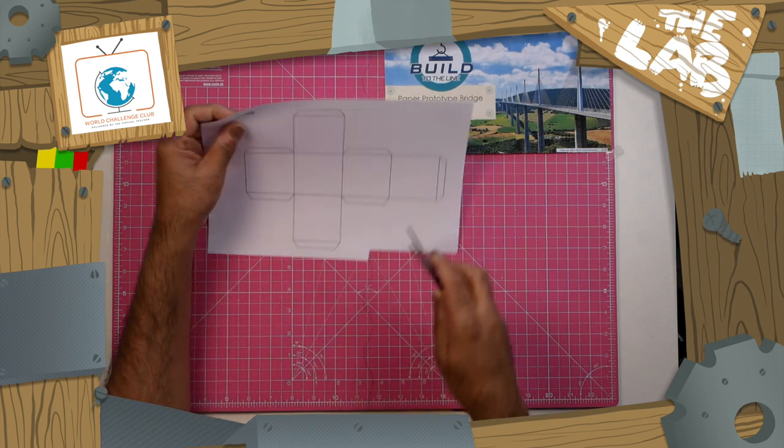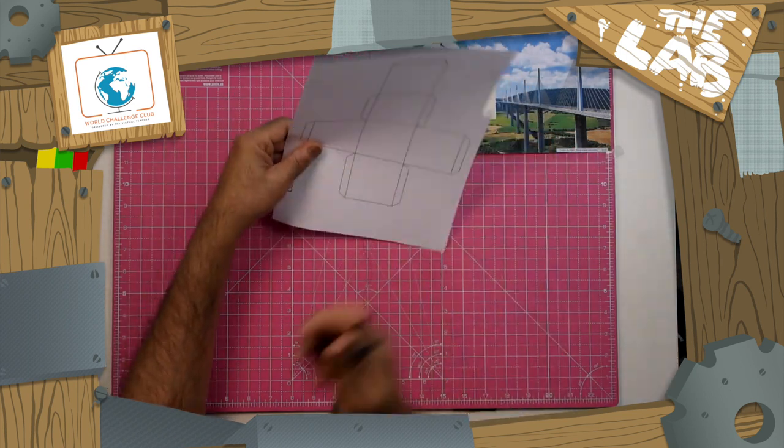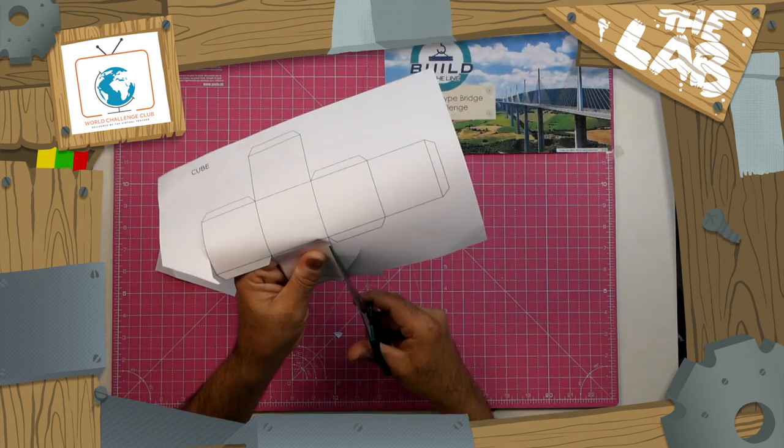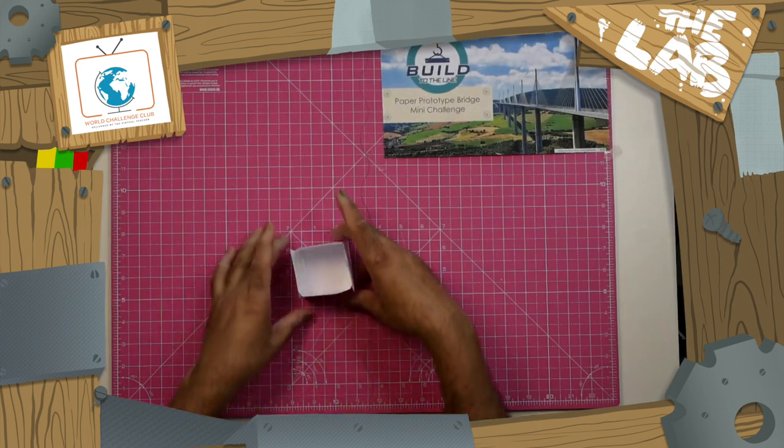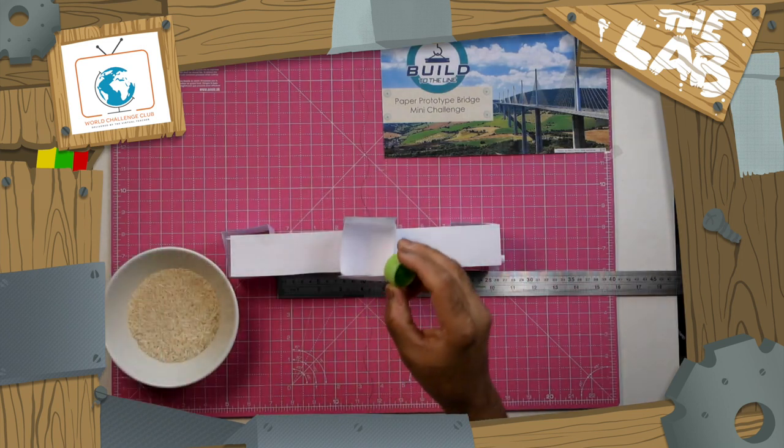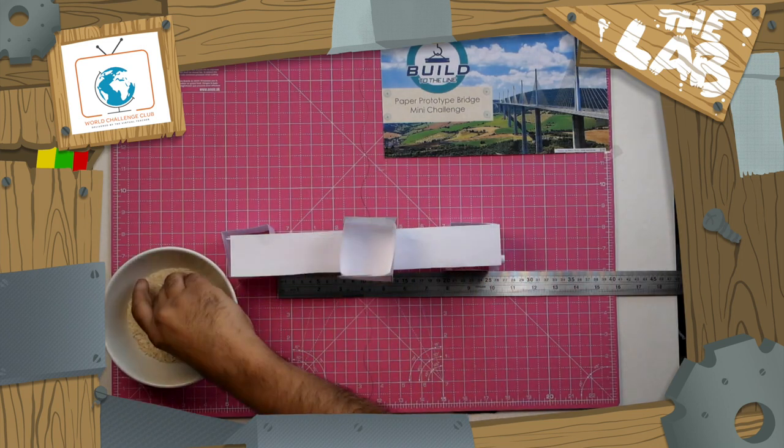I'm going to use drink bottle caps full of rice for a measure. But we'll need a container to sit on the bridge. You can make one by folding up some paper into a box shape.